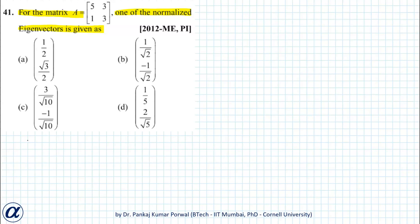So our matrix A is 5, 3, 1, 3, multiply with vector in A. It is 1 by 2, root 3 by 2, right equals 2.